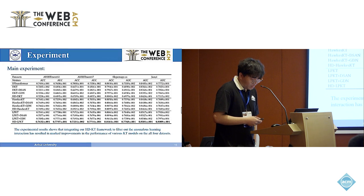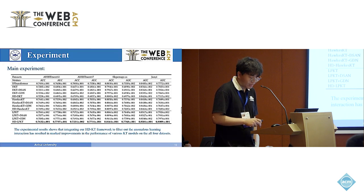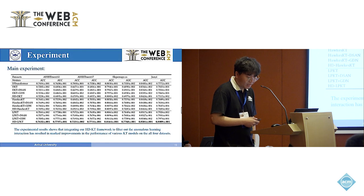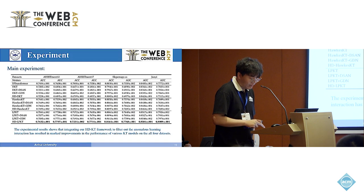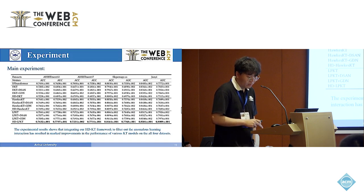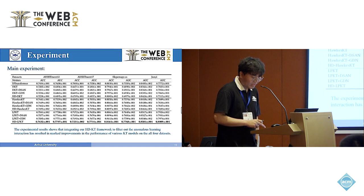It is clear that integrating the HDKT framework to filter out anomalous learning interactions resulted in marked improvement in the performance of various KT models on all datasets. Compared to the SATA KT model D-Transformer, our HDKT model outperformed them on all four datasets. Rather than modifying the KT network structure, our approach offers greater flexibility, allowing it to adapt to various KT models.